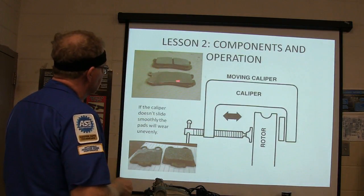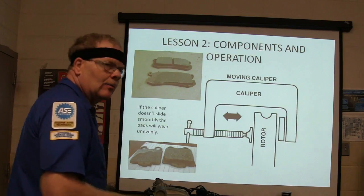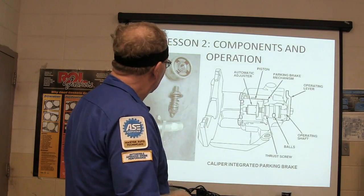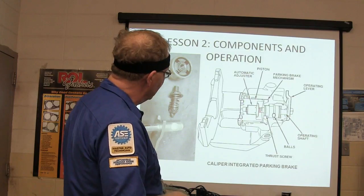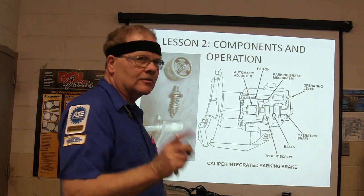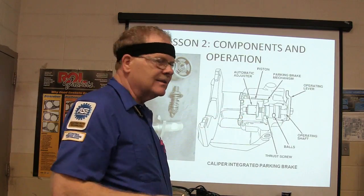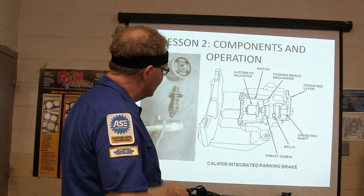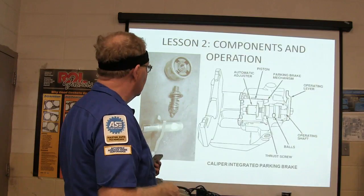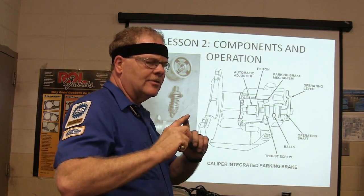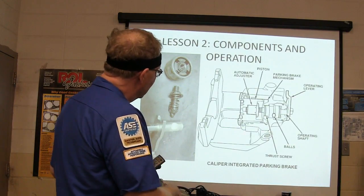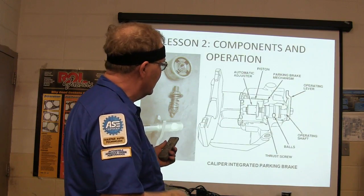You see pads where one side wore out more than the other? That's typically because the caliper slide isn't working. These rear calipers have a little screw in there for your parking brake — as the parking brake operates, it keeps screwing the piston farther out. You can't just push those back in; you've got to screw them back in with a special tool. Vehicles like Michelle Goosby's Ford 500 do this. The ones that use the disc brake for the parking brake are going to have that screw-type piston.